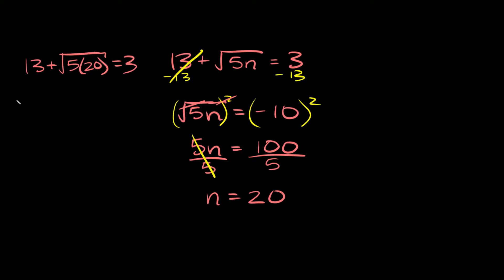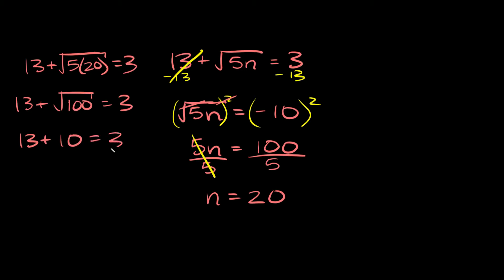So this is 13 plus — 5 times 20 is equal to 100 — so the square root of 100, which is equal to 3. So then we get 13 plus the square root of 100, which is 10, and that's equal to 3. Now 13 plus 10 is actually equal to 23, not 3.